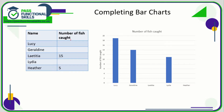Moving on to completing incomplete bar charts. This is quite similar to what I've mentioned previously, however with this example we also need to complete the table. The table has some missing information, so we need to put two bars on the graph and put three values in the table. So how many fish did Lucy catch?